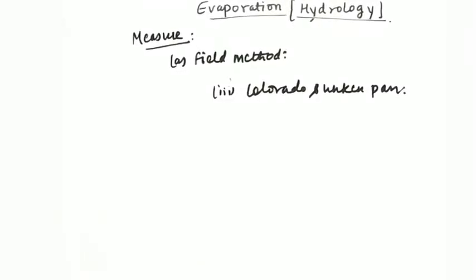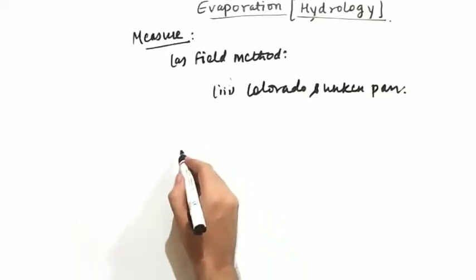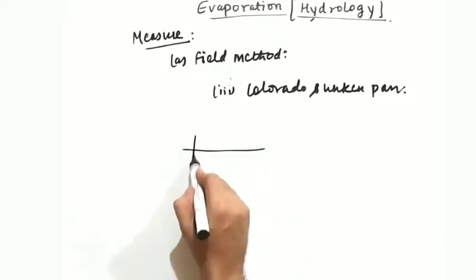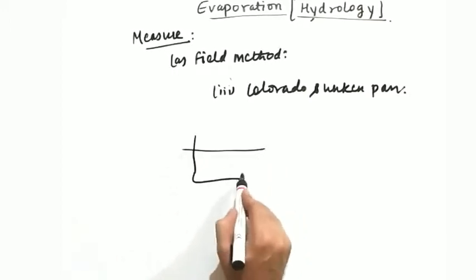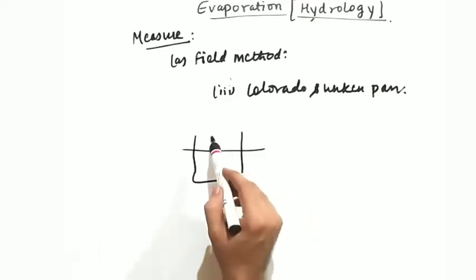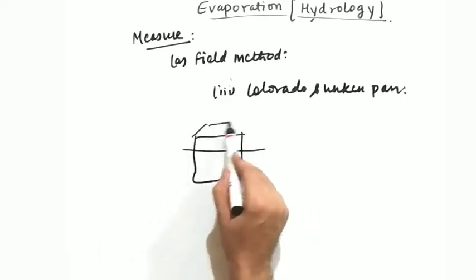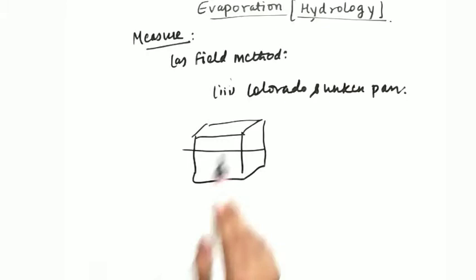The third pan is Colorado sunken pan and its specialty is that some portion is in the water, it is in the ground, and the rest of the portion is on the ground.